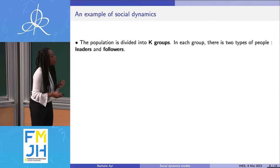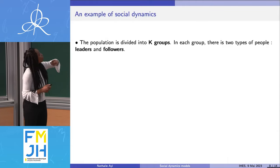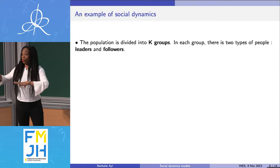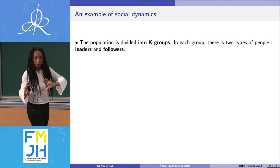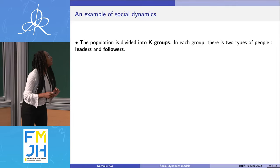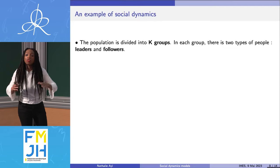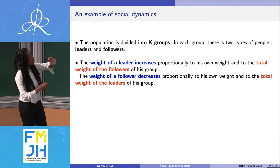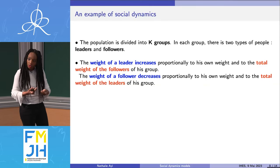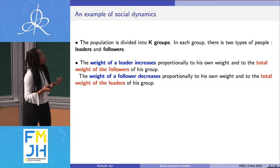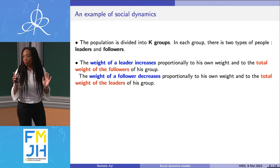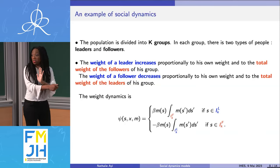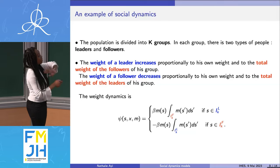I'll talk about two examples of social dynamics. The first is a case where you divide the population into K groups, each with two types of people: leaders or followers. You cannot switch — you are either one or the other. For instance, you can decide that the weight of a leader increases proportionally to its own weight and the total weight of the followers in its group, while the weight of a follower decreases proportionally to its own weight and the total weight of the leaders in its group. This is the dynamic that describes exactly that.